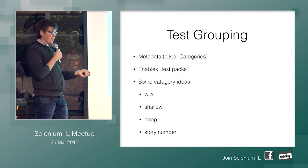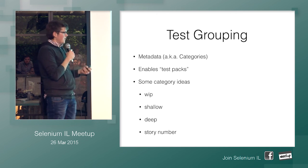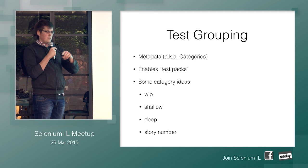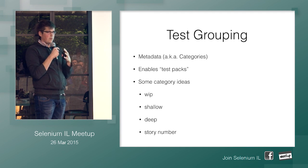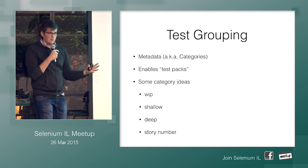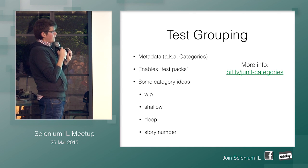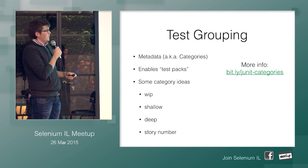I've also seen people use story numbers for features that were built. You can say, we have a release going out, let's take all the story numbers and run a suite of tests tagged with those story numbers. You can dynamically create a suite that only exercises tests written against the release going out. For more info on JUnit categories, check out the documentation — it goes to the docs and it's super easy.